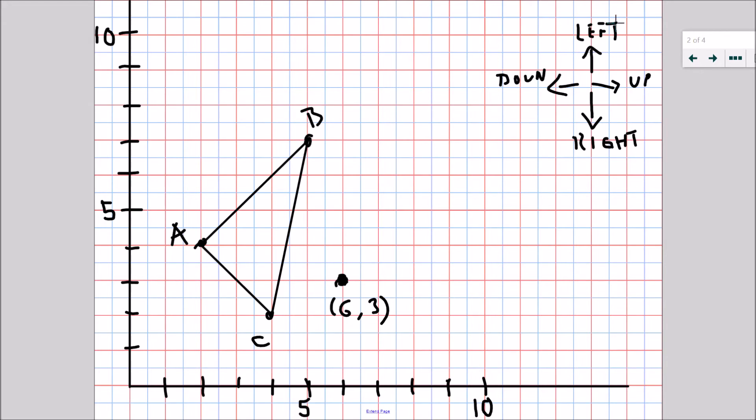Now let's start with point C, since it's the closest to our point of rotation. It is two to the left and one down of my rotation point. This means my new point, since left turns into up and down turns into left, should be two up and one left. There is our new C.